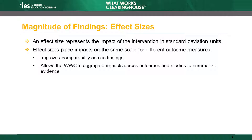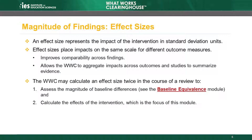During the course of a study review, the WWC may calculate an effect size at two different points. First, when assessing the magnitude of differences between the intervention and comparison groups at baseline — discussed in Module 3, Baseline Equivalence. Second, when calculating and reporting the effects of the intervention, which is the focus of this module.